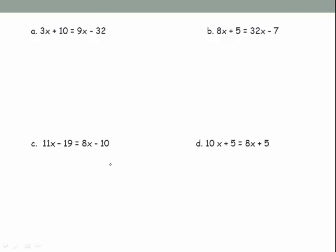Here are more examples that are already simplified on each side. We check: 3x plus 10 and 9x minus 32 — simplified. 8x plus 5 and 32x minus 7 — simplified. 11x minus 19 and 8x minus 10 — simplified. 10x plus 5 and 8x plus 5 — simplified. None of these need any further combining before we begin solving.